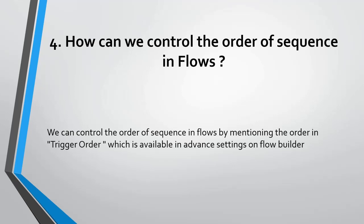How can we control the order of sequence in flows? We can control the order of sequence in flows by specifying the order in the trigger order field, which is available in the advanced settings of Flow Builder. This is a feature introduced in recent releases.